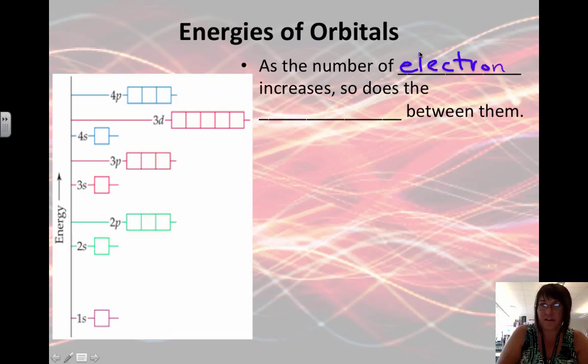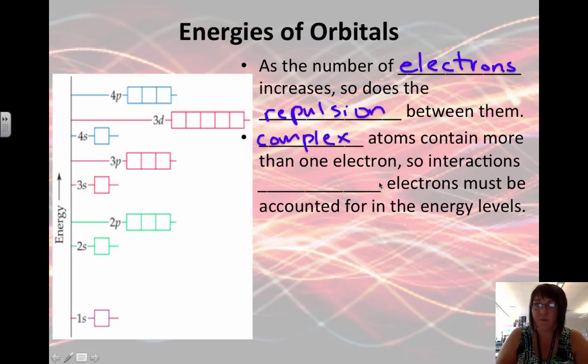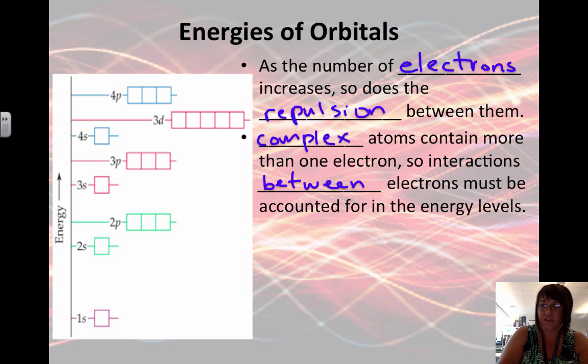As the number of electrons increases, so does the repulsion between them, which causes their energy to go up. Complex atoms that are more complicated than hydrogen contain more than one electron, so interactions between electrons must be accounted for in the energy levels.